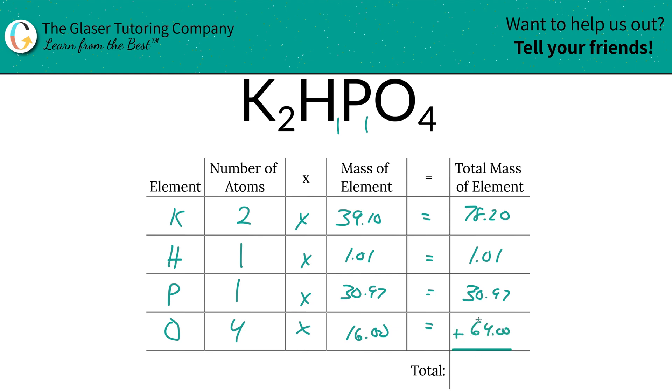Then to find the total mass of the entire compound, all you got to do is add up all the total mass of each individual element. So this is 174.17, and the units here are going to be in terms of AMU, atomic mass units, because we're finding molecular mass.